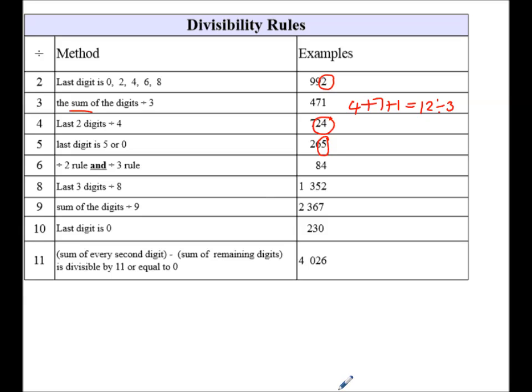If I want to do divisibility by 6, it must be an even number. And then I've got to add the digit. So 8 plus 4 is 12. 12 is divisible by 3. So it's divisible by 2 and it's divisible by 3. So 84 is divisible by 6.